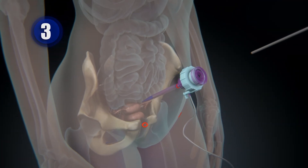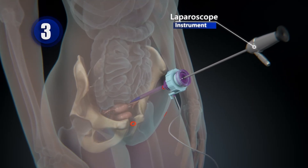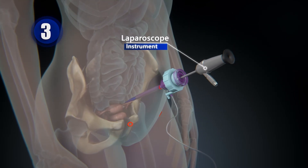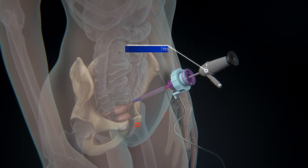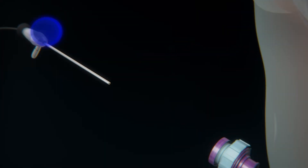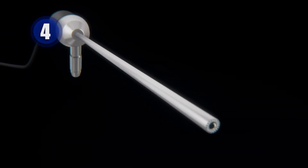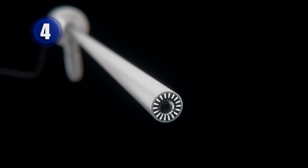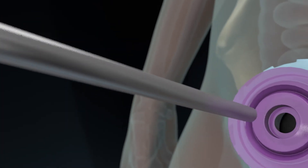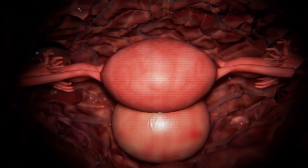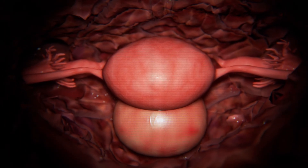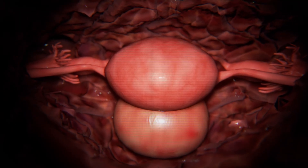Now, the laparoscope will be inserted through the umbilical port by your surgeon. In the operating room, images from the laparoscope camera will be displayed on a monitor. Your surgeon will carefully examine the tissues and organs in your pelvis to seek for any indications of a disease that could account for your symptoms.